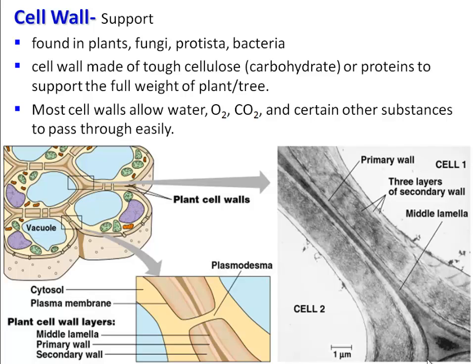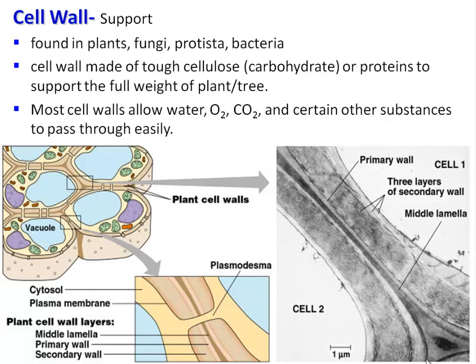The third structure that's primarily different between the generalized animal cell and a plant cell is the cell wall. Its primary use is support. We're going to find a cell wall in plants, fungus, protista, and even bacteria — essentially everything but animals. The cell wall is made up of a tough carbohydrate called cellulose, though other organisms besides plants will also embed proteins instead.